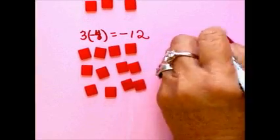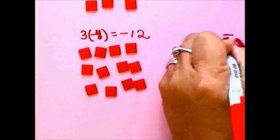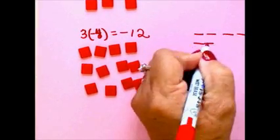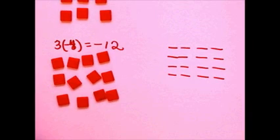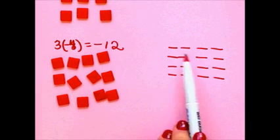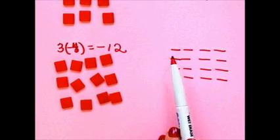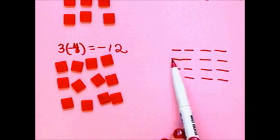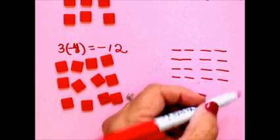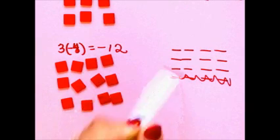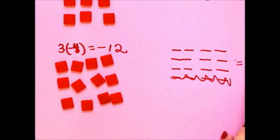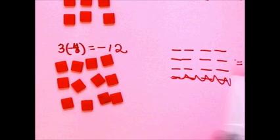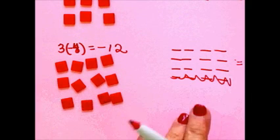And the same thing here. I have 3 rows of negative 4. My phone kept ringing and I apologize. So, we have with the charged-fill model then, I have 3 rows of negative 4. And when I count up my negatives, I end up with 12 negatives. So, my answer would be negative 12.